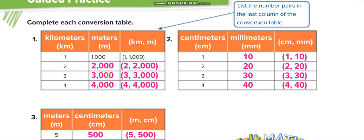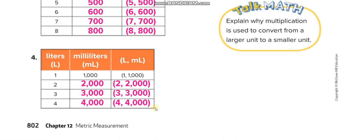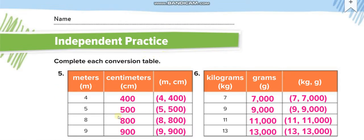So: one kilometer — one thousand; two — two thousand; three — three thousand; four — four thousand. Similarly for centimeters to millimeters: one centimeter is ten millimeters, two centimeters twenty, three thirty, four forty. And from meters to centimeters: five meters is five hundred centimeters, because one meter is one hundred centimeters. The liter table follows the same pattern: one liter — one thousand milliliters; two — two thousand; three — three thousand; four — four thousand.